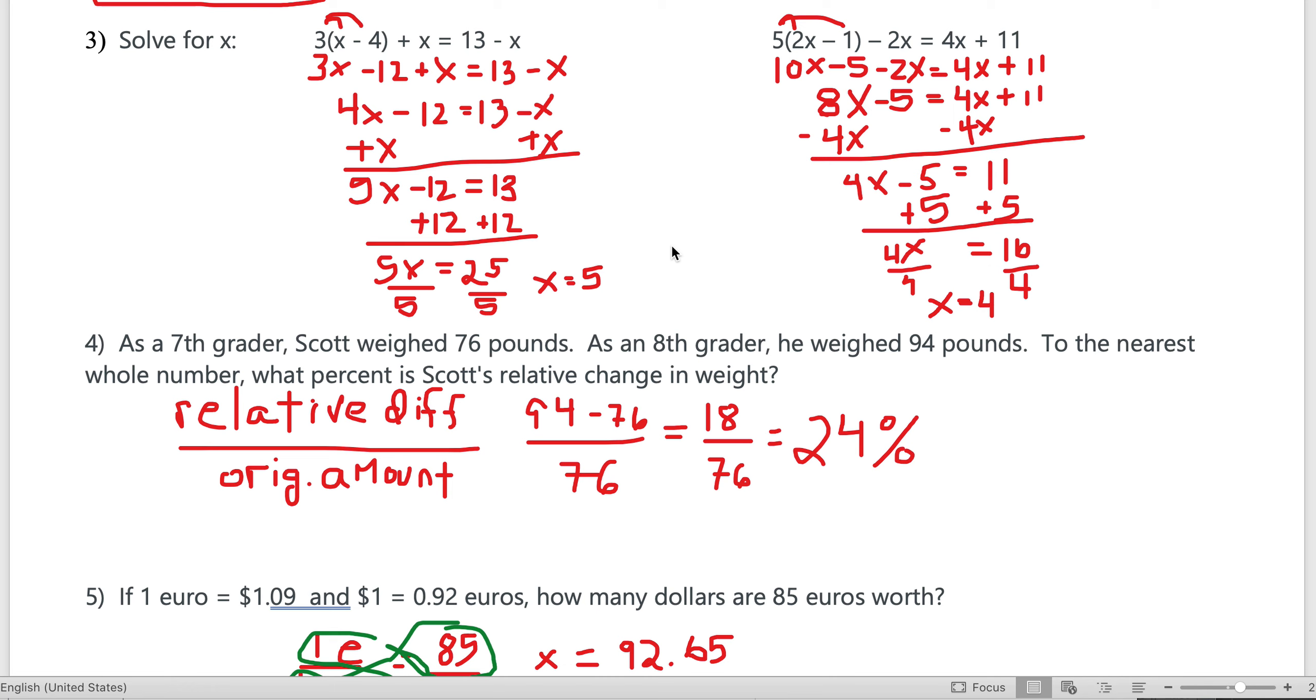Number four: As a seventh grader, Scott weighed 76 pounds. As an eighth grader, he weighed 94 pounds. To the nearest whole number, what percent is Scott's relative change in weight? You need the relative difference over the original amount: 94 minus 76, that's 18, divided by the original 76.